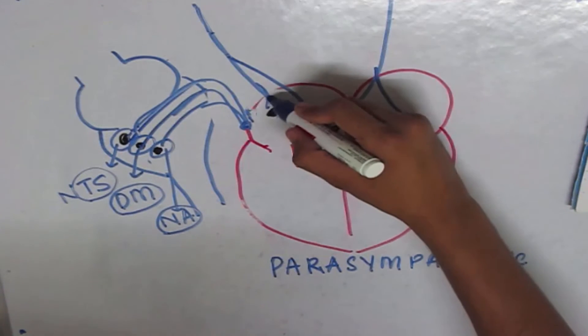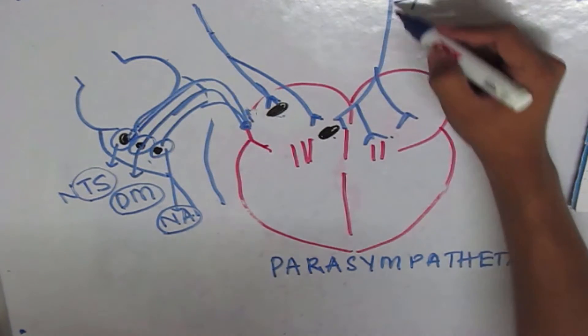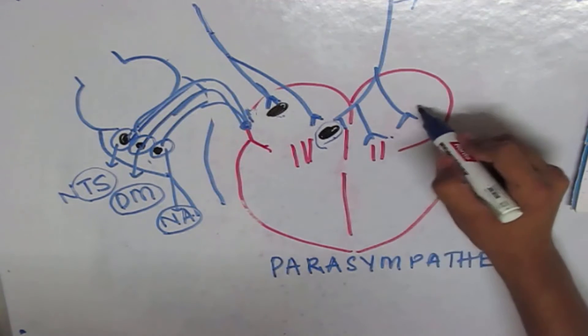The right vagus supplies the SA node and the corresponding parts of the right atrium. The left vagus supplies the AV node, the bundle of His, and the left atrium.